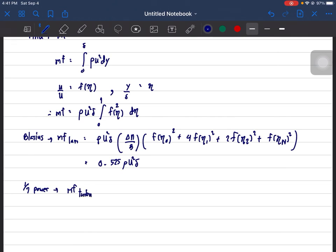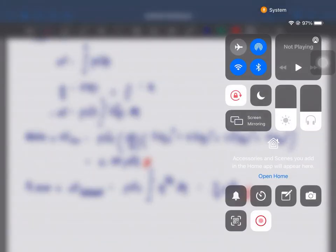For turbulent, it is rho u square del times the integral from zero to one of eta to the power of two over seven d eta, and that is seven over nine rho u square del. So these are the answers. Thank you.